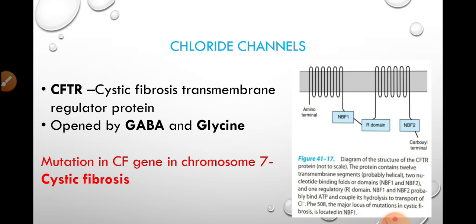The CFTR, or cystic fibrosis transmembrane regulator protein, is a major chloride transport channel. Cystic fibrosis is a disease caused by a mutation in the cystic fibrosis gene on chromosome 7.